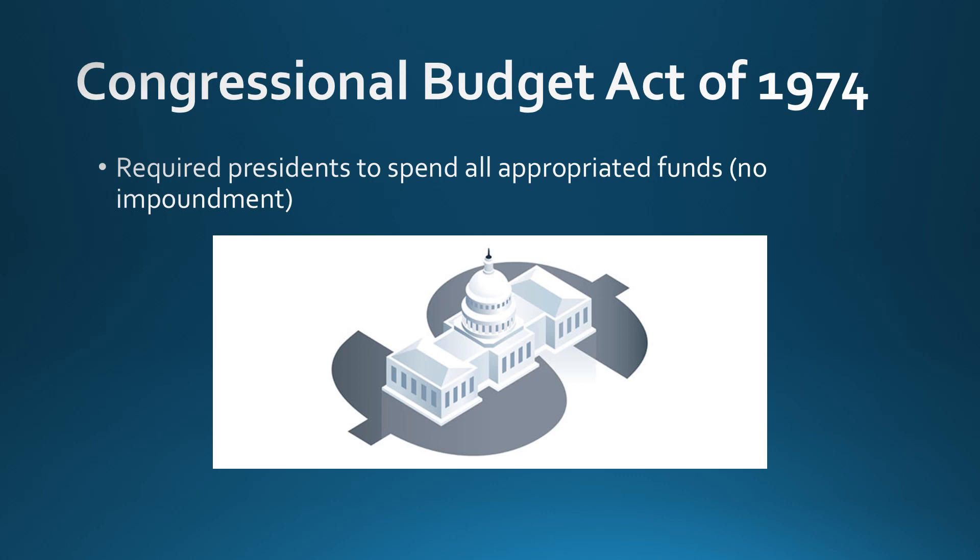Finally, the Congressional Budget Act of 1974 required presidents to spend all appropriated funds. Congress has the Power of the Purse — they're the ones who set aside money through appropriation. When Congress appropriates money, they can now tell the president he must spend all of it. Nixon had tried to impound money — essentially locking it up so nobody had access to it — because he thought there was too much wasteful spending. He wasn't doing it corruptly; he was limiting government spending. But Congress passed this law saying no more impoundment: presidents must spend all appropriated funds.